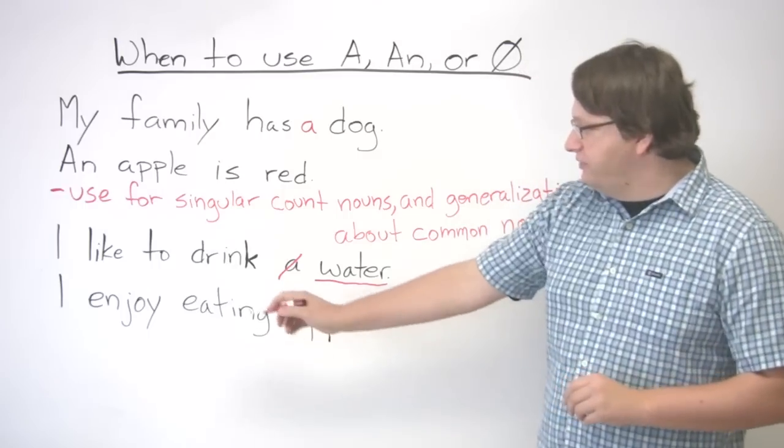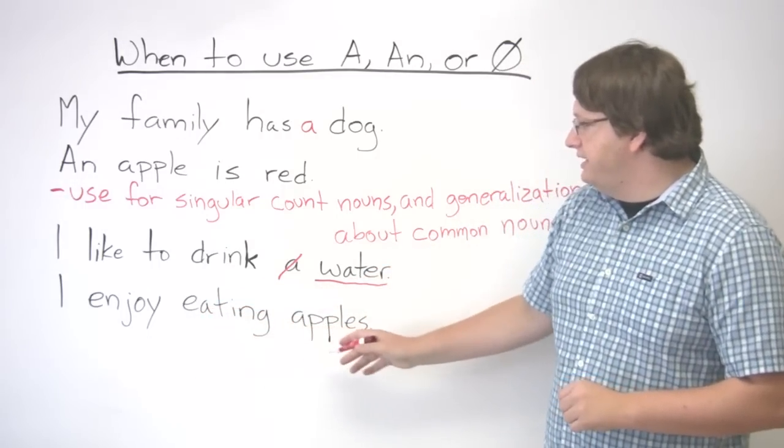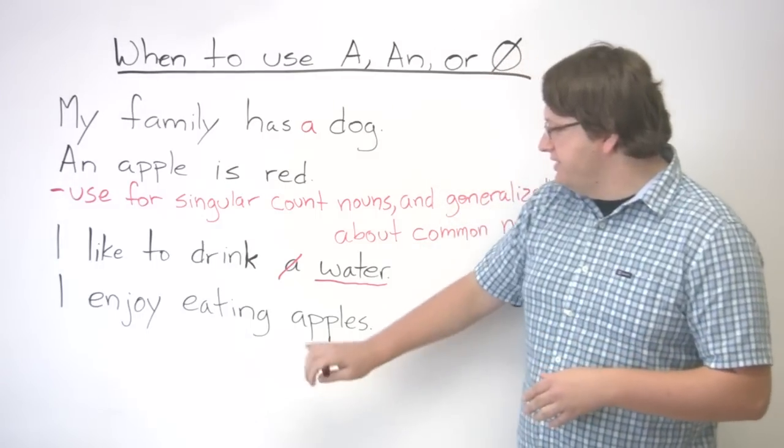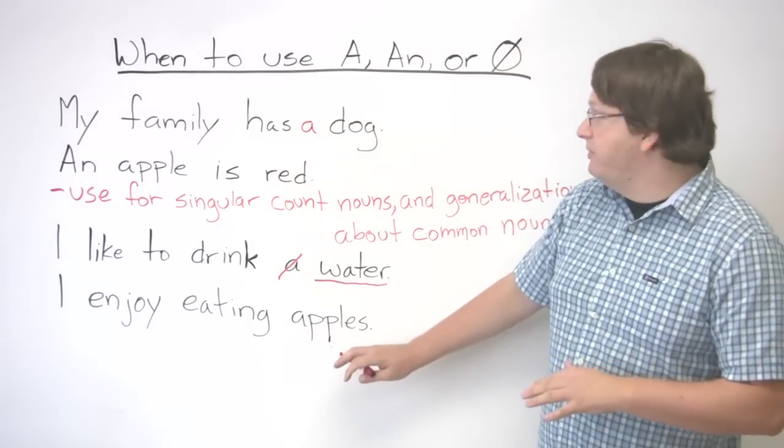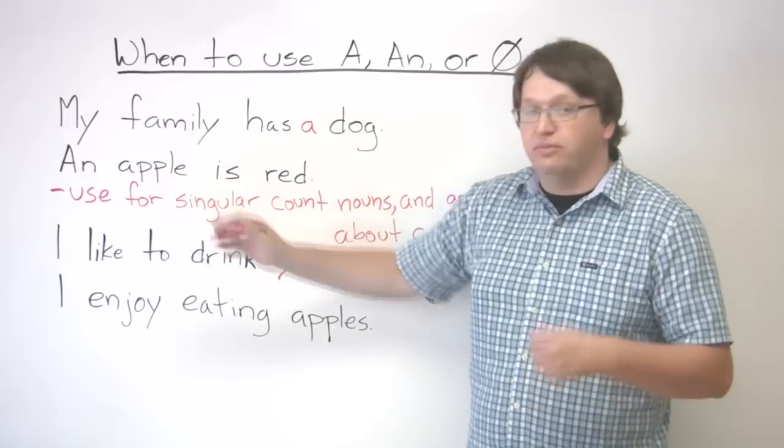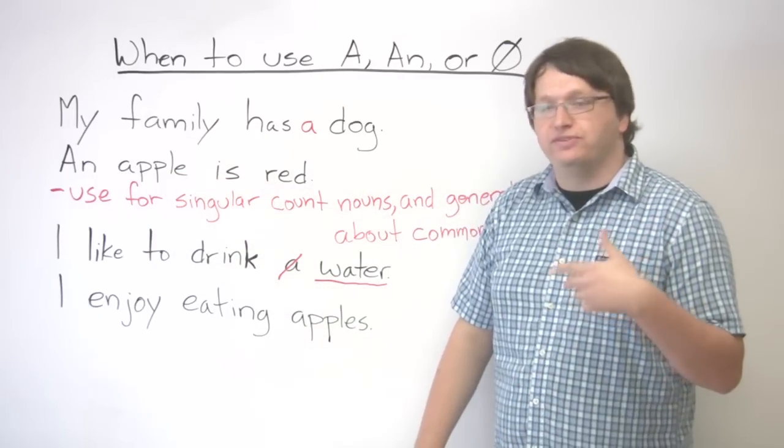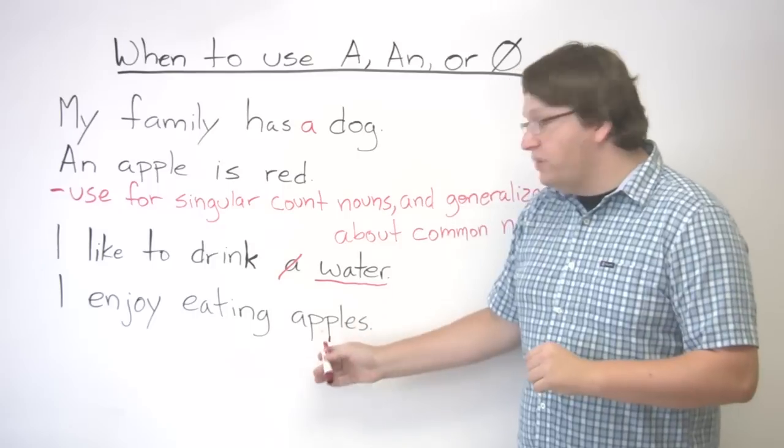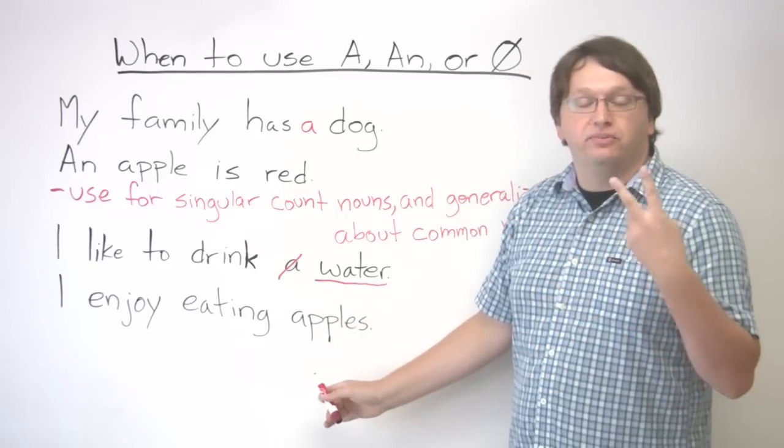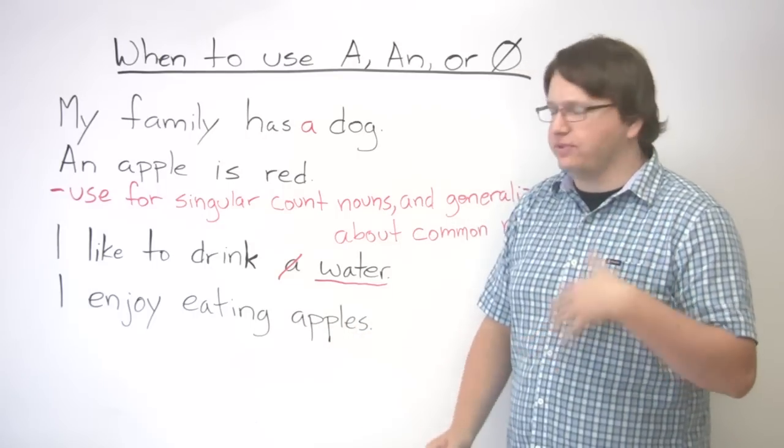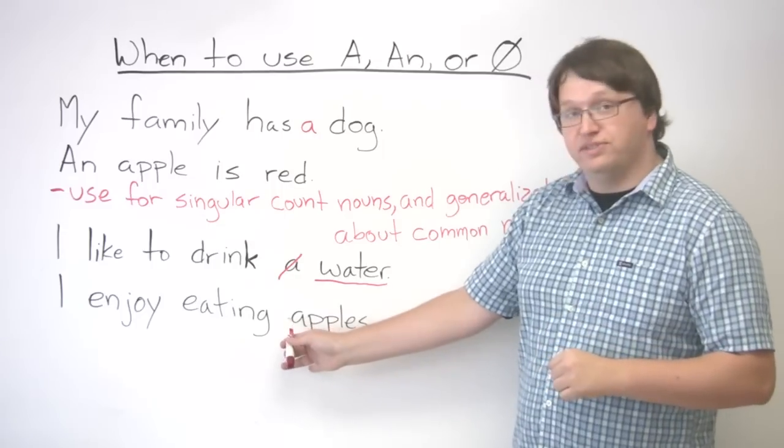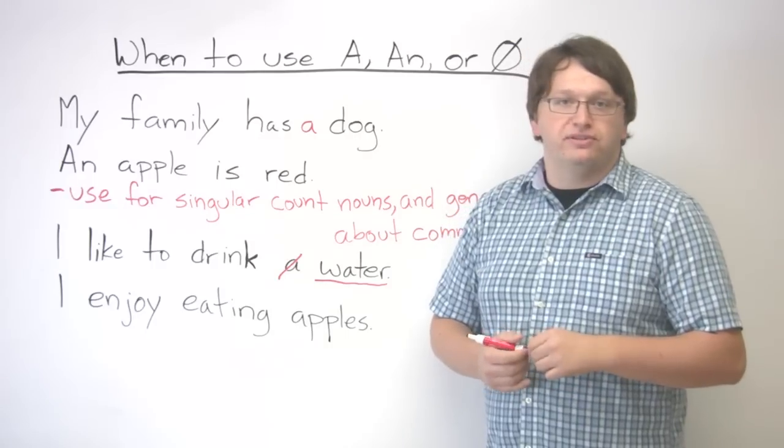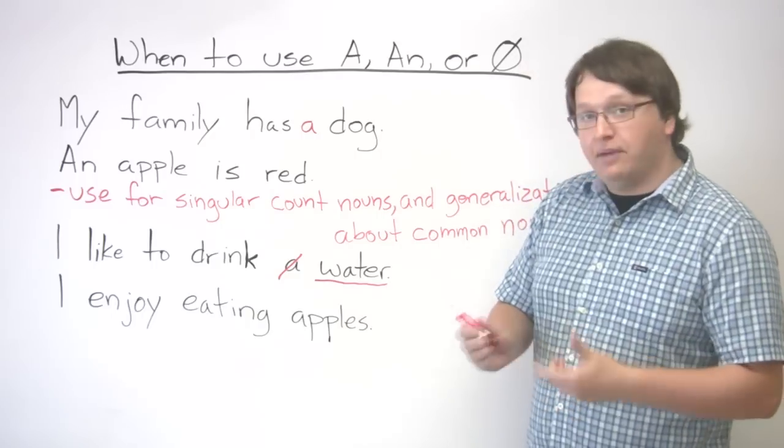Okay, and if you're looking at this statement here, I enjoy eating apples, you're not using any kind of article because this is a count noun. Remember, just like up here, we have an apple. Remember, you can have one apple, two apples, three apples. You can count apples, but when you're doing the plural form, so when you're talking about two apples or four apples or any number of apples, you do not use an article. Okay, so you cannot say I enjoy eating an apples or a apples. I enjoy eating apples.